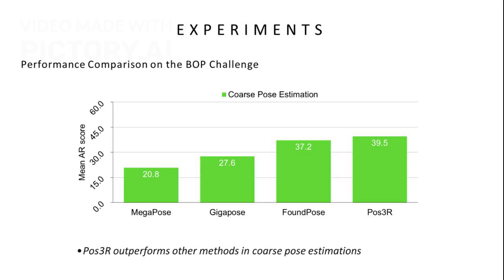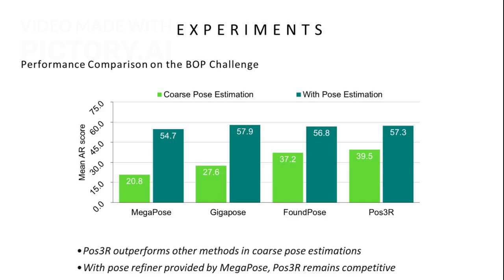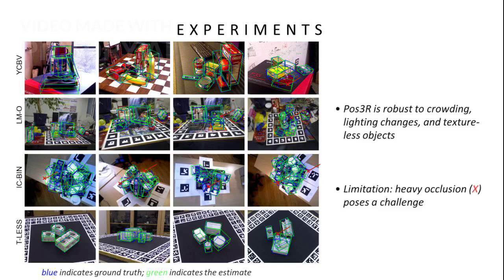On the challenge benchmark, Poser outperforms many methods on coarse pose estimation. Our pipeline is robust and effective. When combined with Megapose's refiner, it remains competitive with state-of-the-art. Here we show some qualitative results. The blue box indicates ground truth and green is our estimate. Poser works well under challenging conditions such as clutter, lighting variations, and texture-less surfaces. However, heavy occlusion remains a limitation, as marked by the red X.